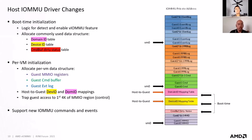For the host IOMMU driver changes, the driver will first detect and enable the VIOMMU feature, then allocate commonly used data structures. These include the domain ID table, which maps host domain ID to guest domain ID; the device ID table, which maps host device ID to guest device ID; and the command buffer dirty status table, which contains the command buffer dirty status register for each VM.